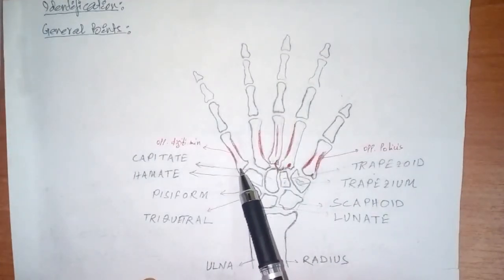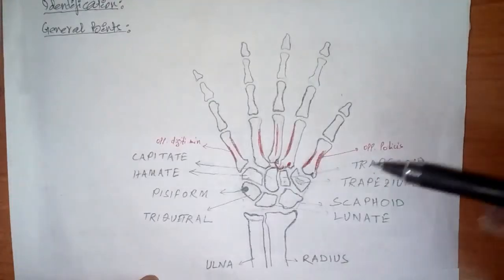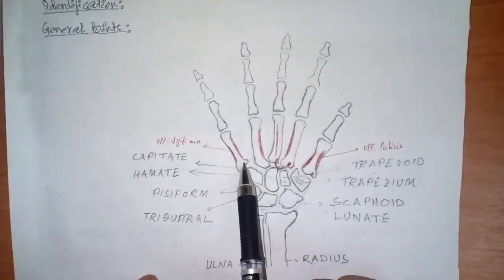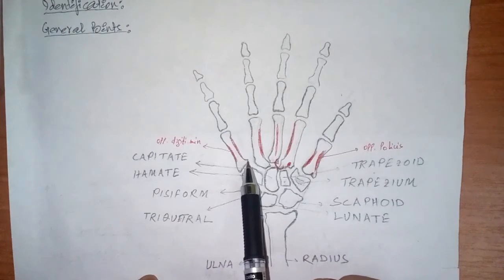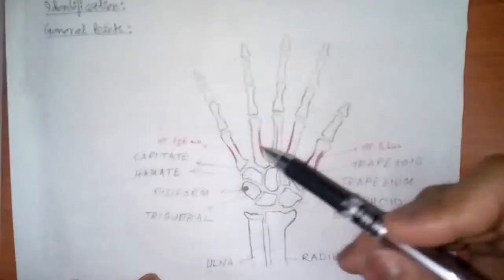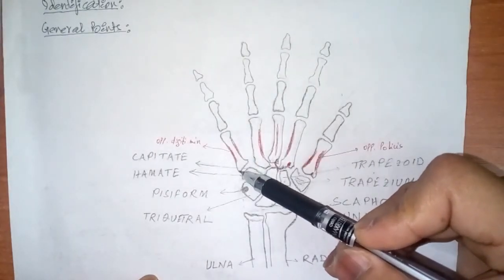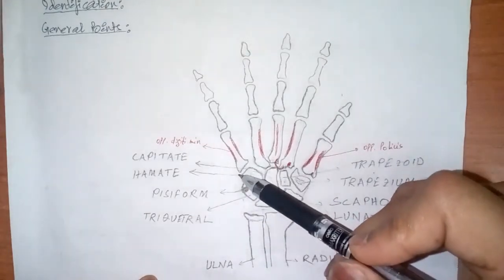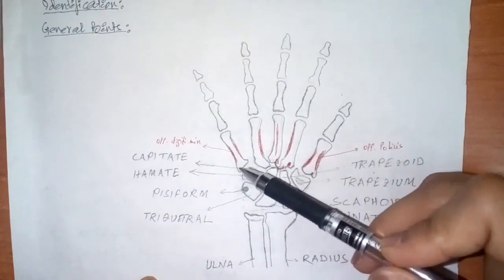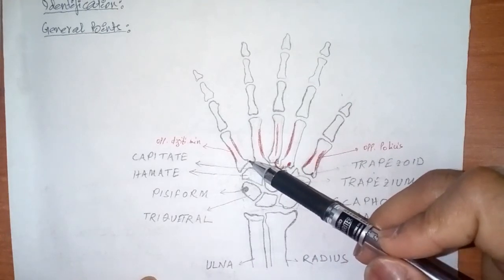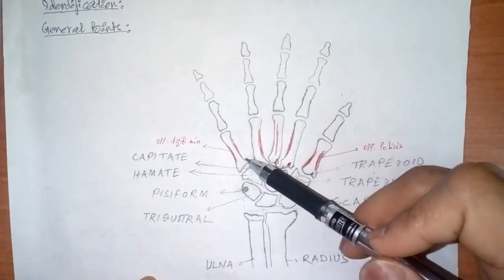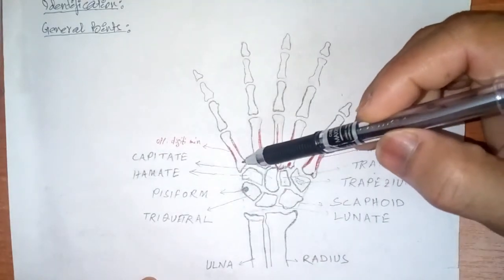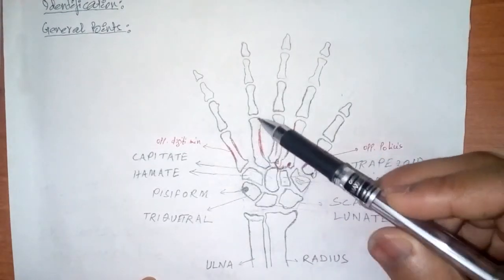Coming to the fifth metacarpal bone: on its base, it has an elongated articular strip which articulates with the fourth metacarpal bone. It also has a non-articular tubercle on its medial side — non-articular because there is no adjacent bone, so it is a free end. This elongated articular strip is the articular projection for the articulation with the fourth metacarpal bone. This bone articulates with only two bones: the hamate, and the fourth metacarpal bone.